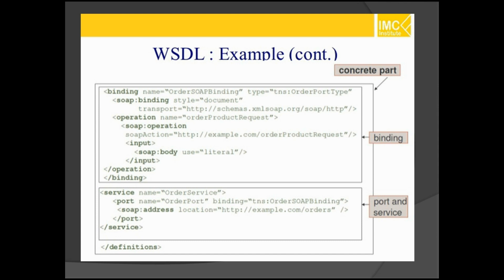To communicate — for example, a Java application communicating with PHP, and PHP communicating with .NET — application-to-application communication can only be done using web services. Whatever web service you specify, based on that structure, the information will be displayed.